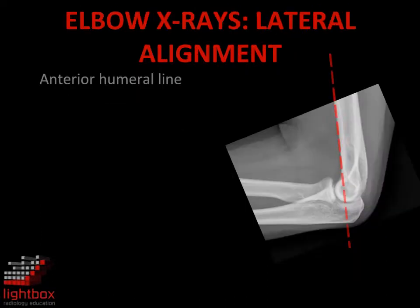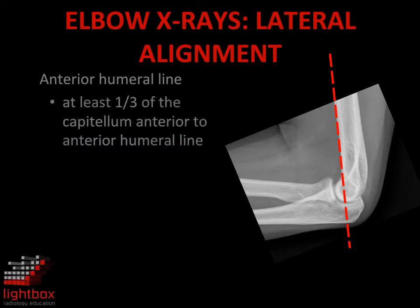The anterior humeral line is a line drawn along the anterior cortex of the distal humerus through the elbow joint. On a true lateral x-ray, one third of the capitellum should lie anterior to this line.